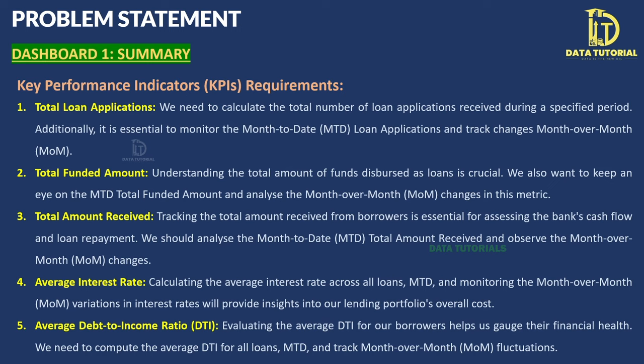The fourth KPI is the Average Interest Rate charged to customers, with MTD and MoM tracking. The fifth is the Debt-to-Income Ratio (DTI), which is a gauge banks use to assess a customer's financial health and decide whether to approve a loan. A KPI will be created for this measure as well.